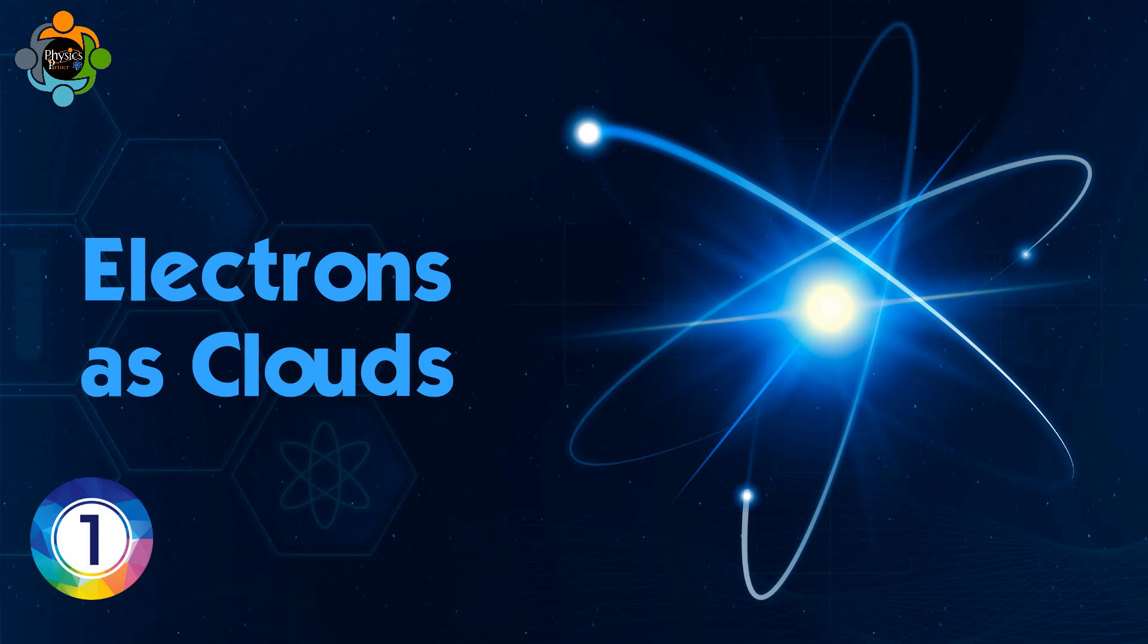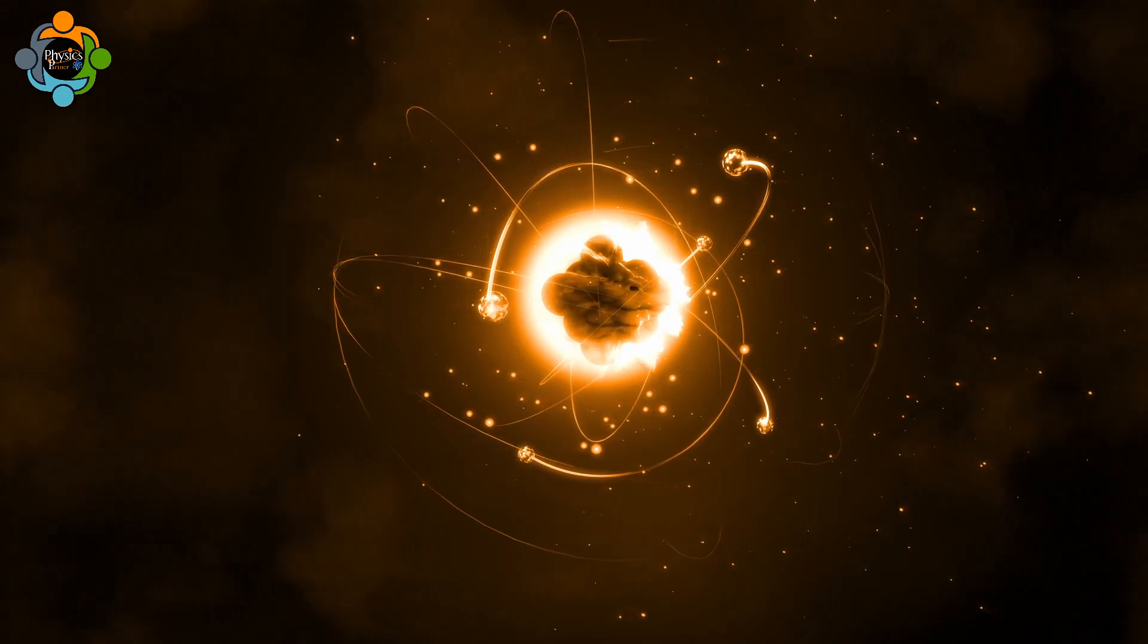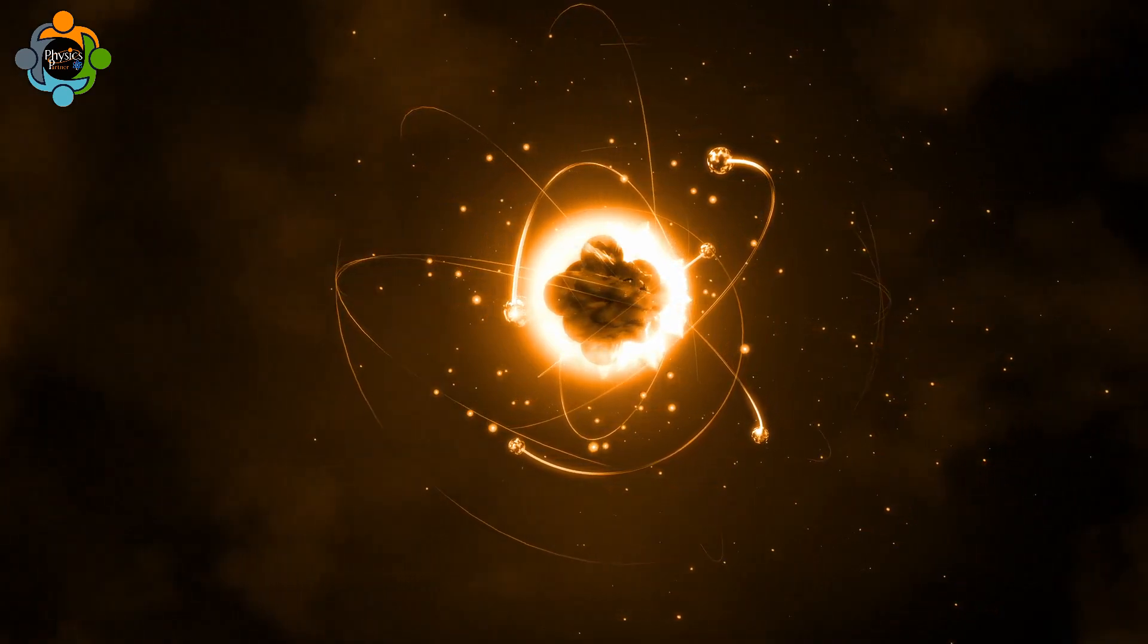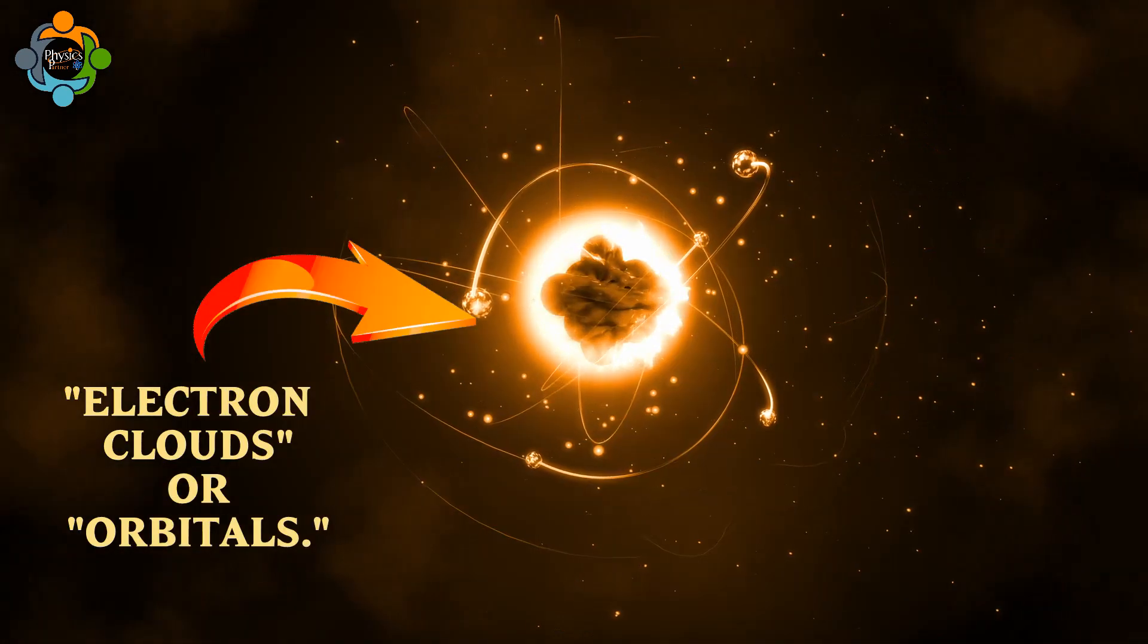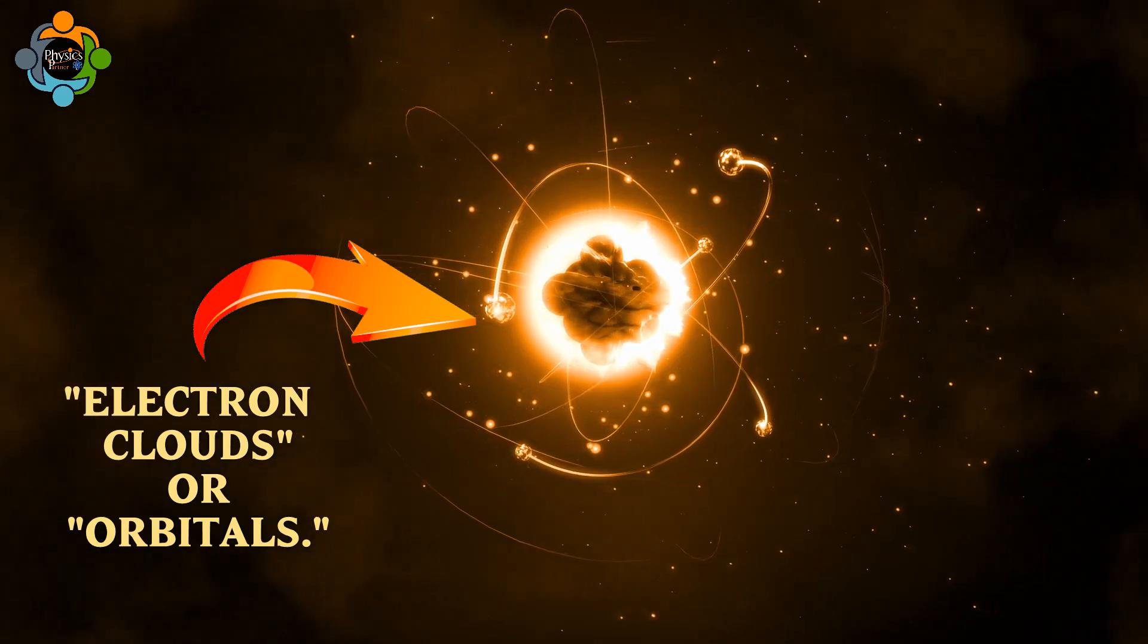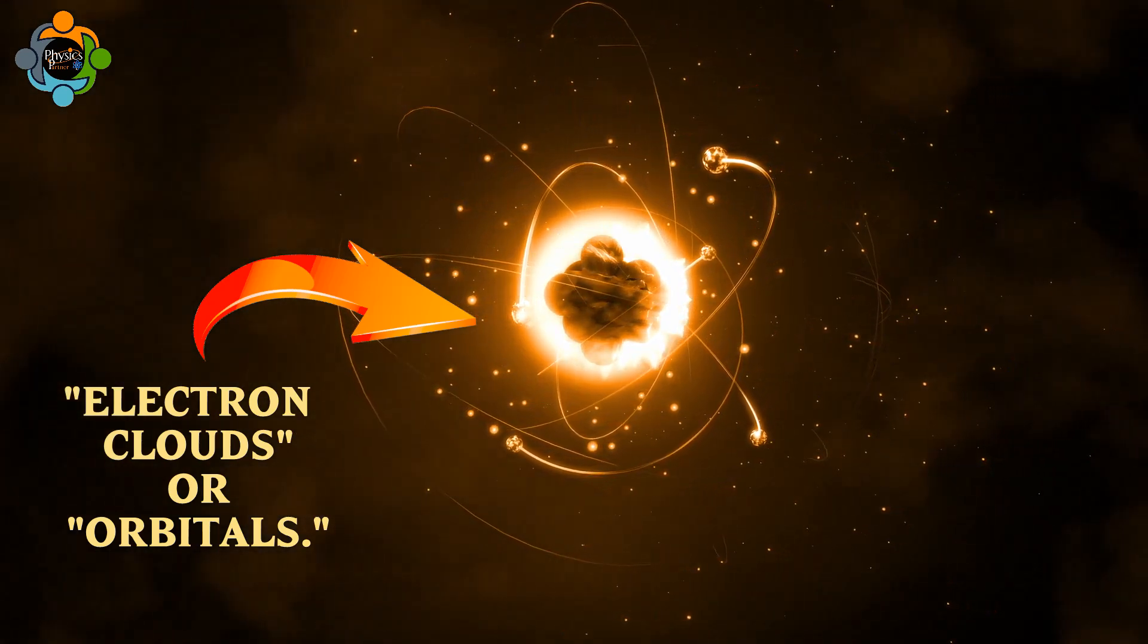Number one: electrons as clouds. In the quantum model, electrons are not tiny planets orbiting the nucleus. Instead, imagine them as fuzzy clouds of probability. We call these electron clouds or orbitals. These clouds show us where an electron is most likely to be found at any given moment.